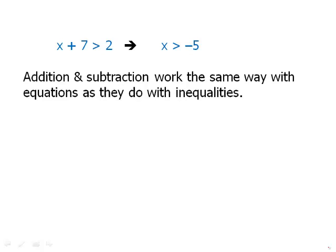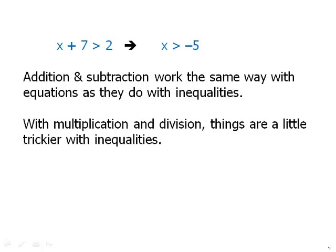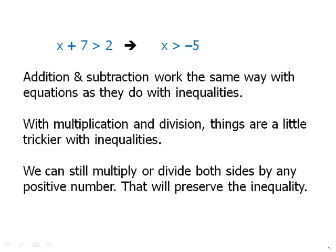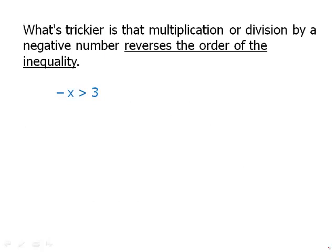With multiplication and division things are trickier. We can multiply or divide both sides by any positive number and the inequality is preserved — that works just like equations. However, multiplication or division by a negative number reverses the direction of the inequality. For example, if −X > 3, to get X by itself we multiply both sides by −1, which changes the direction: negative X becomes positive X, 3 becomes −3, and the greater than sign becomes a less than sign. So the final statement is X < −3.